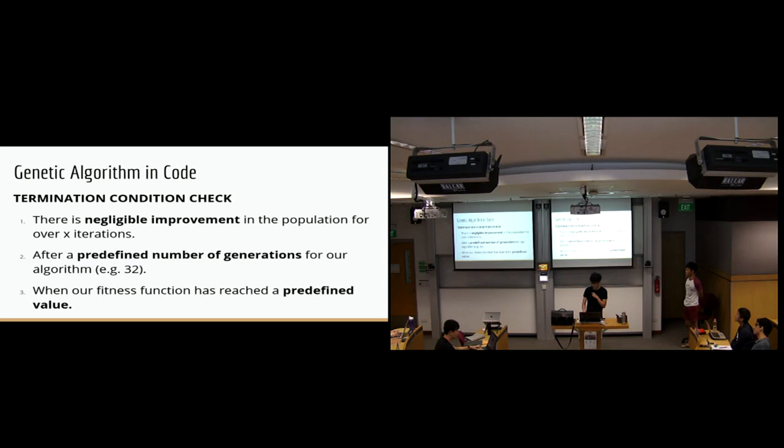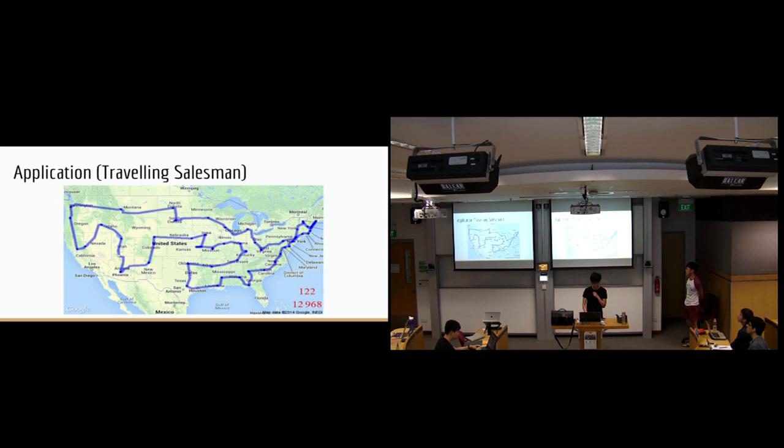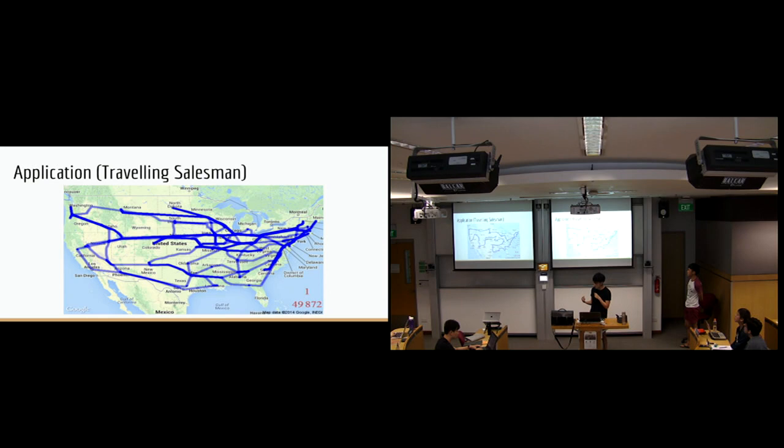I'm going to talk about the application next. This is a traveling salesman problem, which is given a list of cities and the distances between each city, what is the shortest possible route that the salesman can actually visit each city and return to the origin city. We can see that after 124 generations, they managed to minimize it to around 12,000 km.